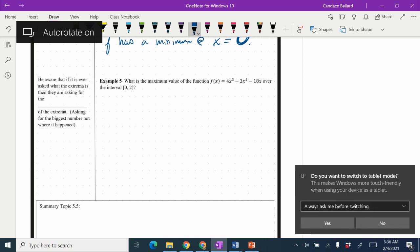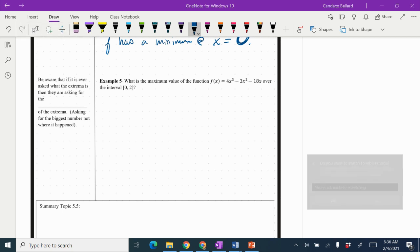In this video, we're going to continue topic 5.4, looking at global or absolute extrema, and we're going to look at example 5.